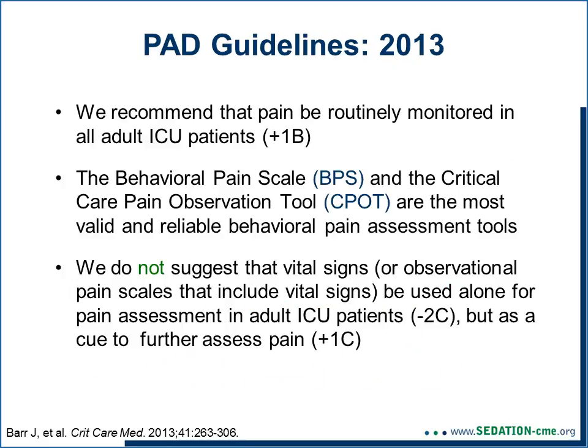There will always be some patients who cannot report their own level of pain. For that group, there are two scales recommended as the most valid and reliable pain assessment tools based on patient behavior. We do not suggest using vital sign abnormalities like hypertension and tachycardia as a surrogate for pain. Rather, recognize that not all patients with those abnormalities are having pain, and use their presence to prompt you to do a pain assessment.